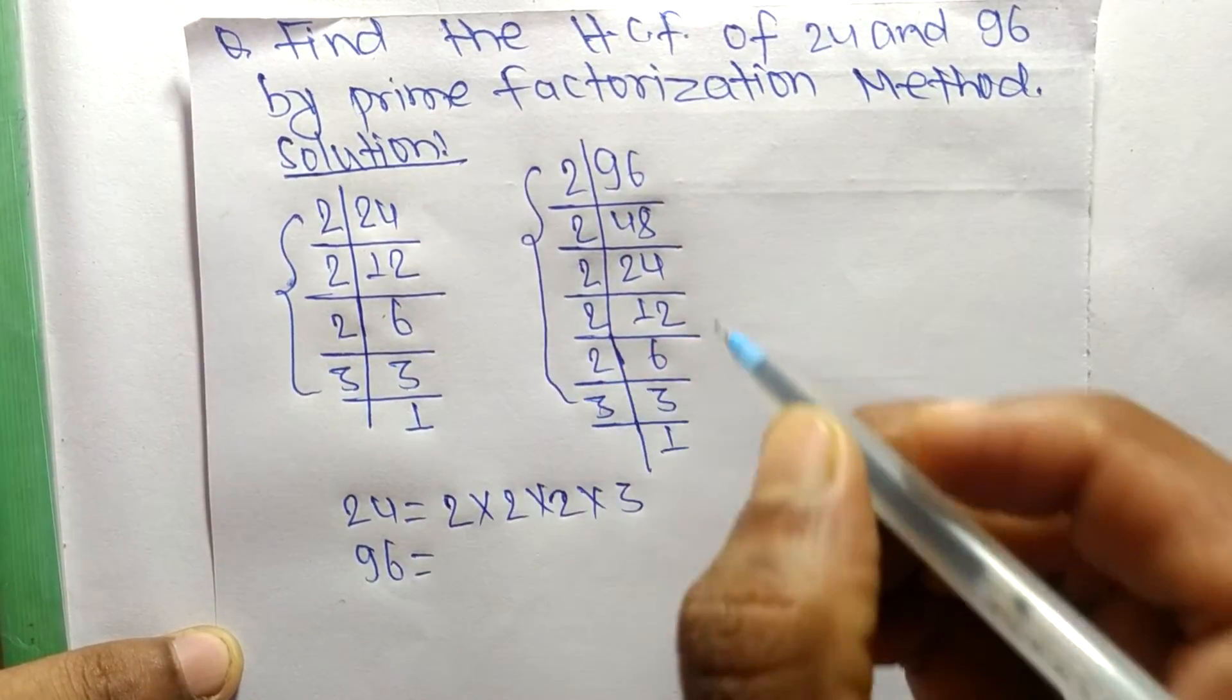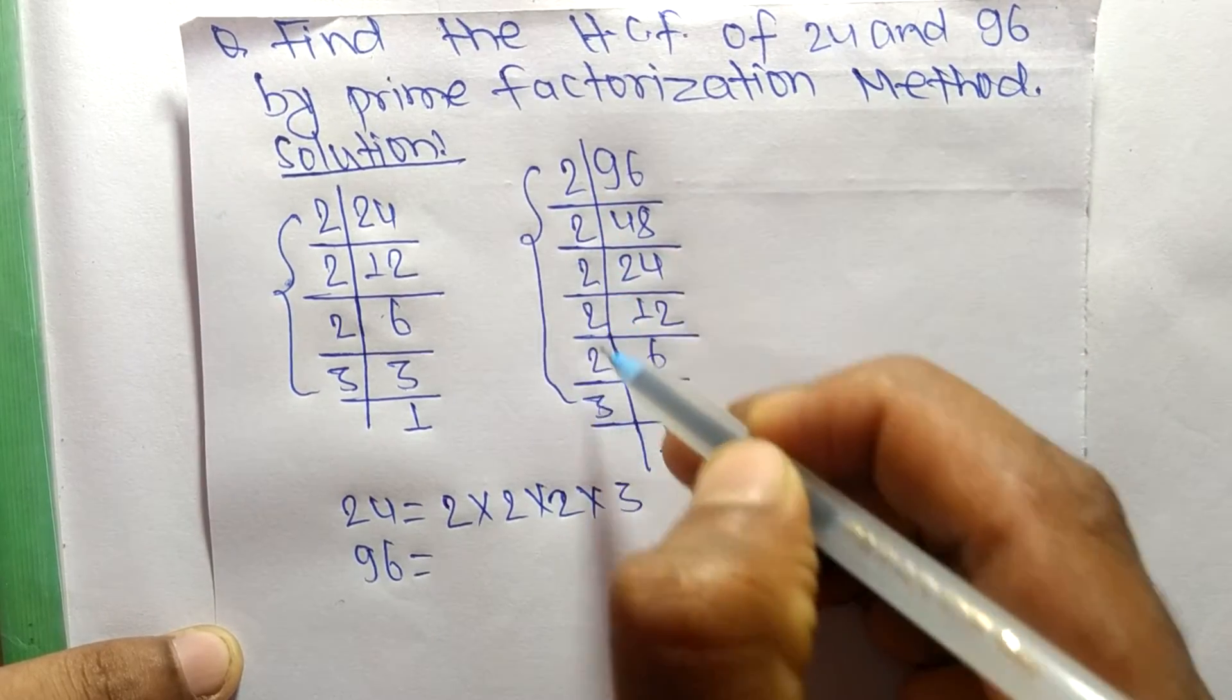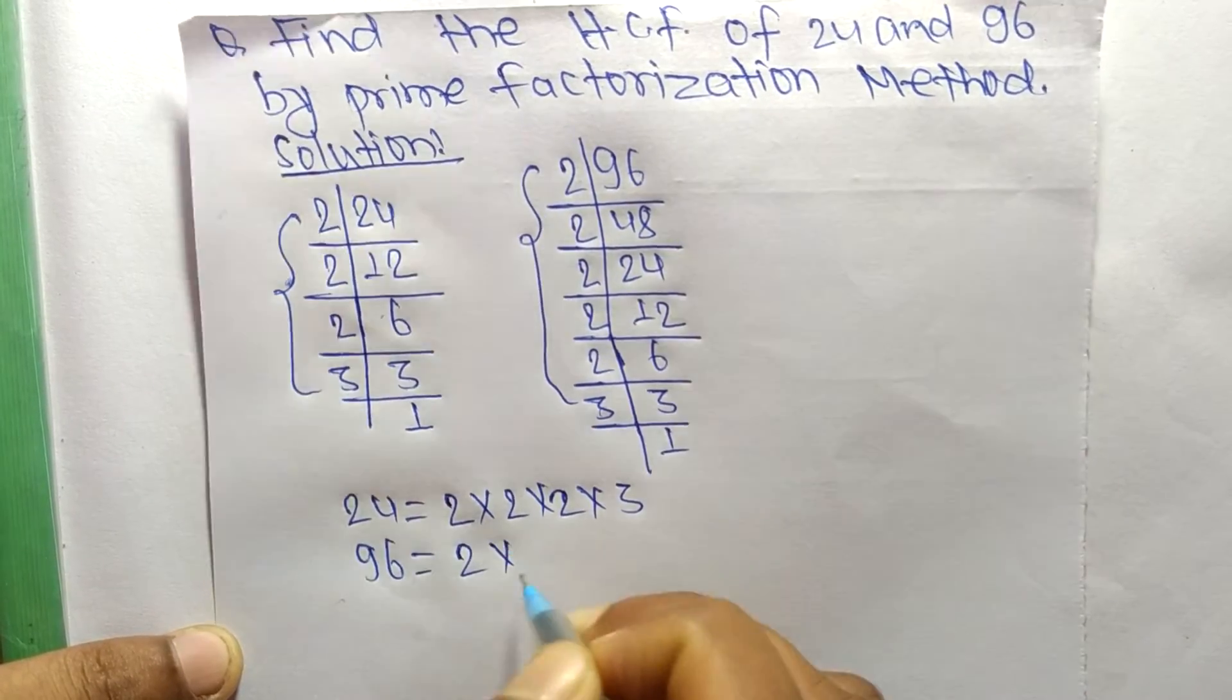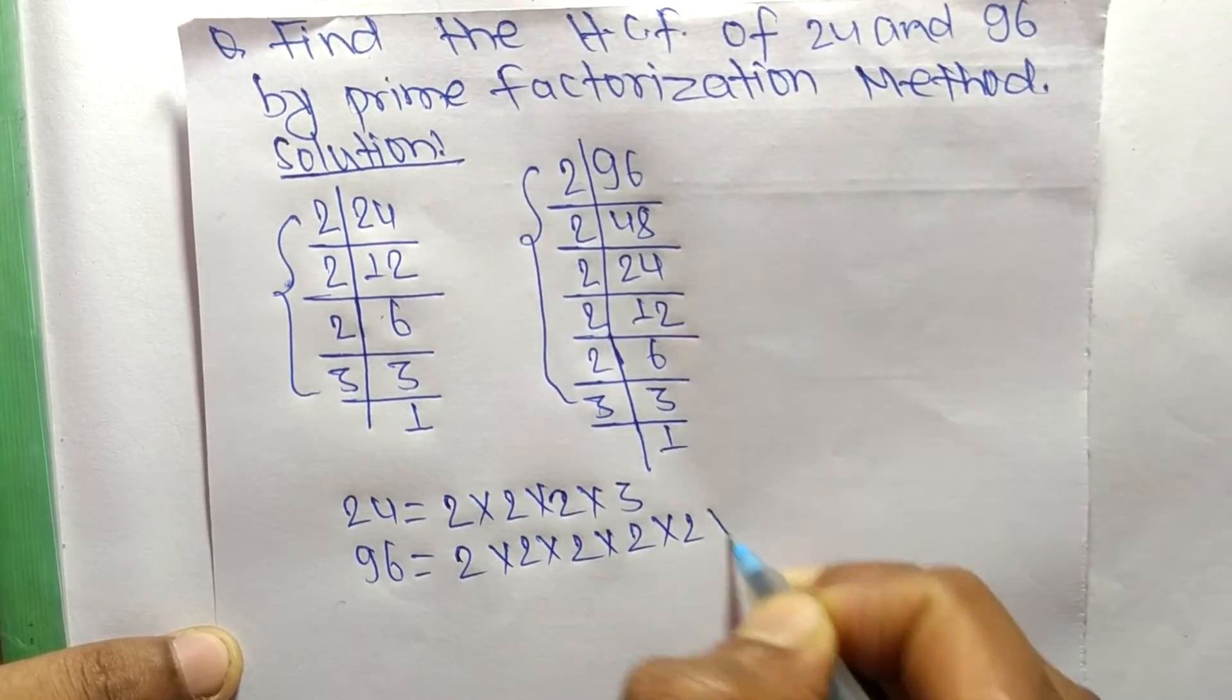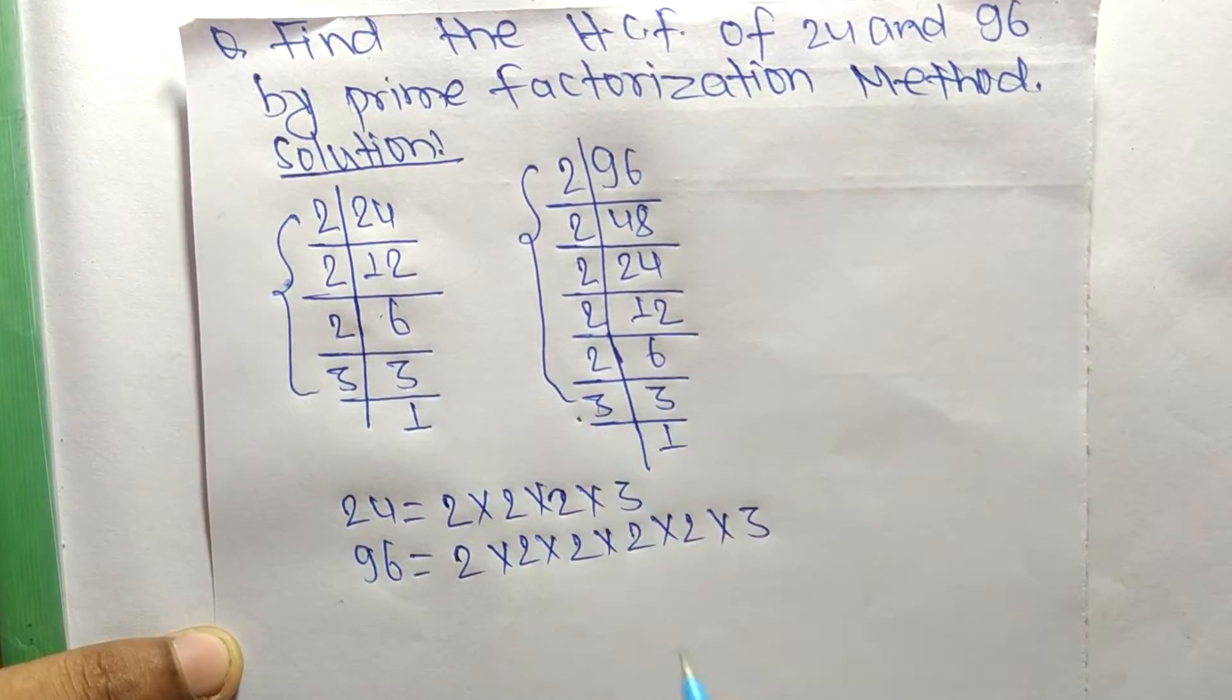2 times 2 times 2 times 2 times 2 times 3. That's five 2s multiplied together, and finally multiplied by 3.